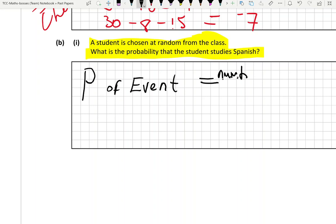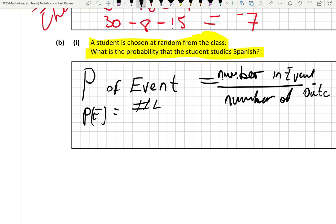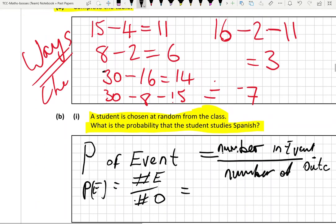The probability of an event - this particular outcome, a specific outcome, in this case studying Spanish - is equal to the number of students that study Spanish, the number in the event, over the total number of students in this case, or the number of outcomes. You might see that as probability of the event equals the cardinal number of events over the cardinal number of outcomes.